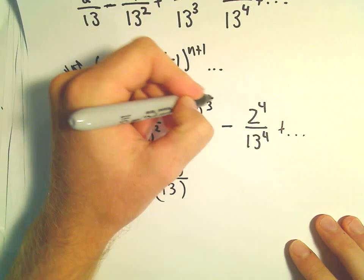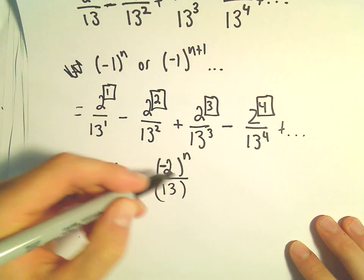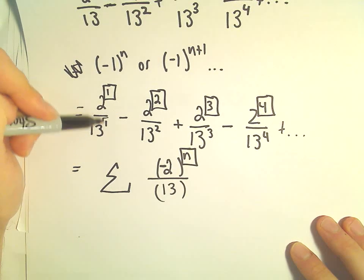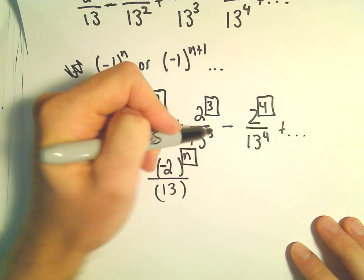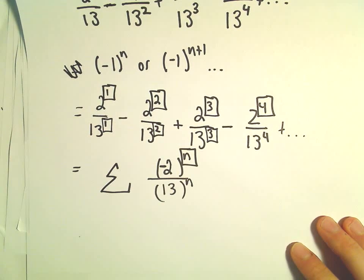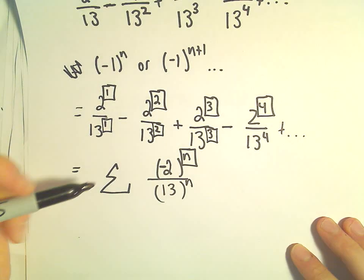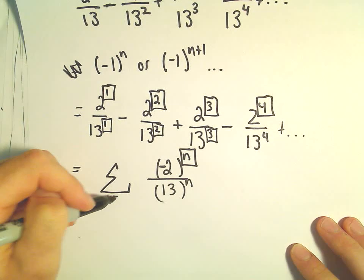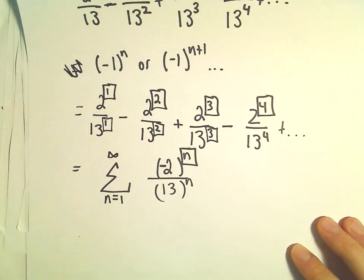That's where I put an n generically. Notice whatever the power is on the 2, the power of the 13 is exactly the same. So if you've got an n on top, we should have an n on the bottom as well. We want this to start at an exponent of 1, so we'll have n=1 up to infinity.